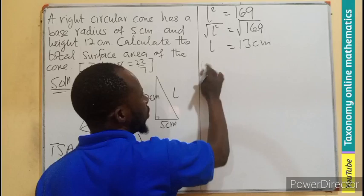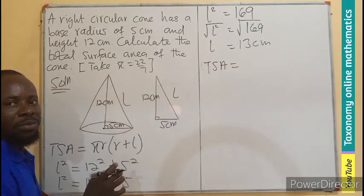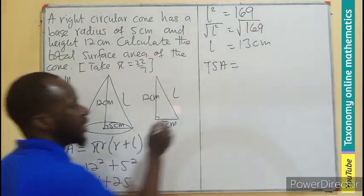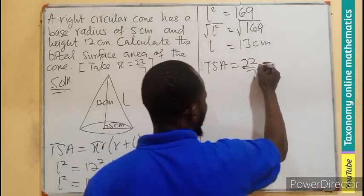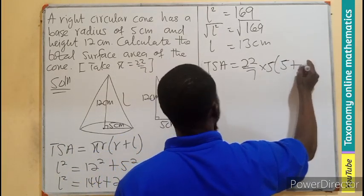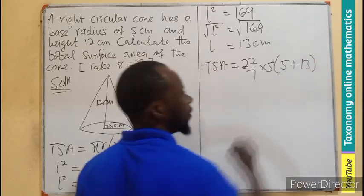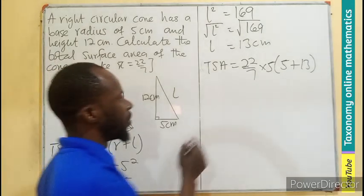Therefore, your total surface area will now be, I am going to substitute from here, π which is 22 over 7, times the radius which is going to be 5, radius 5, slant height 13. That is the formula. We can again do substitution into the formula.